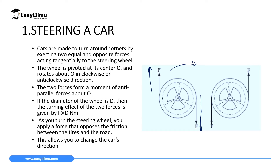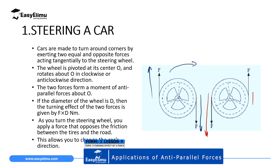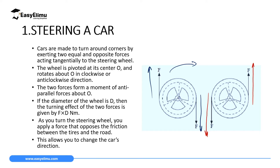If you want it to turn in an anti-clockwise direction, one hand will cause a force downward on the left side of the steering wheel and the other hand will cause a force upward on the right side. In this case there is a couple — two forces acting in opposite directions, as you can see on the screen. The steering wheel is pivoted at the middle and rotates in a clockwise or anti-clockwise direction. The two forces form anti-parallel forces.